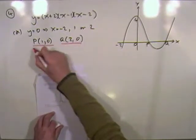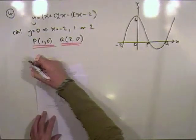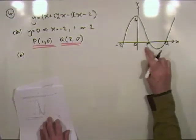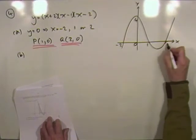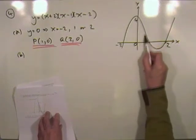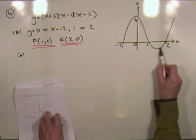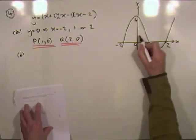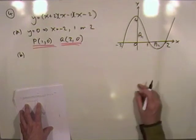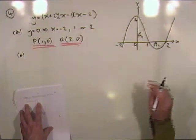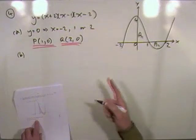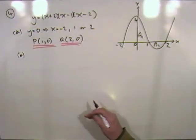Now the second part: find the total shaded area. I'm not going to integrate in one go from zero to two, because the positive elements would get cancelled out by the negative ones and I wouldn't get a total area. I'll do them separately — area one and area two. Area one will be positive, area two negative, but for the total area I'll take the positive value of area two.